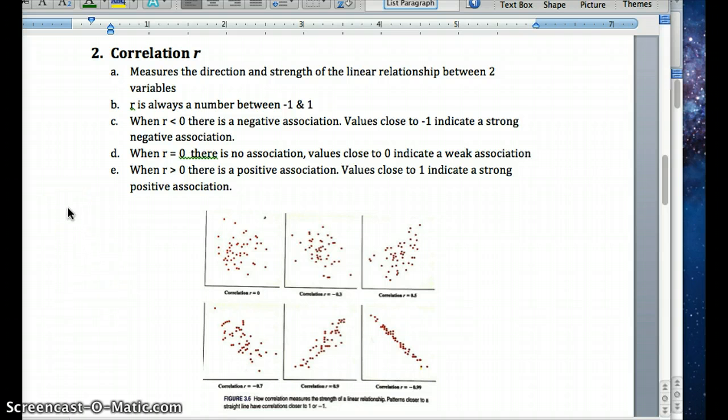Negative 1 indicating a strong negative association, meaning upper left to lower right, would be our best fit line. And that's explained here.